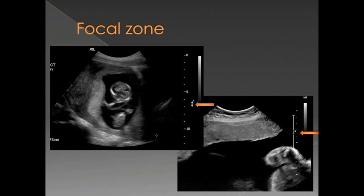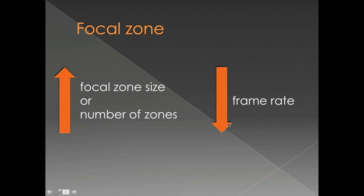As you increase the number of focal zones, the ultrasound machine is actually using multiple echoes focused at those different depths to create bands of the image that are then stitched together. So the wider the focal zone, the more echoes it takes to produce the image, and therefore, the lower the frame rate. So if you have a large number of focal zones, or if you have a large focal zone size, you're going to have a slower frame rate.